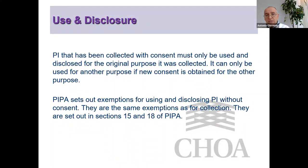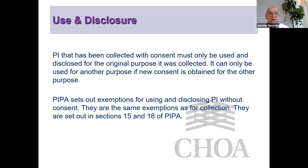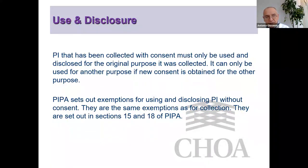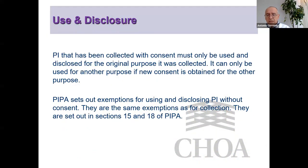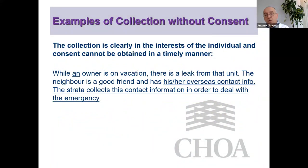Use and disclosure is a key part of your privacy policy. Personal information collected with consent can only be used and disclosed for the purpose it was originally collected — it cannot be used for other purposes. For example, if you've collected phone numbers by consent but now wish to distribute them to everyone in the building for safety check-ins, you must go back to the owners and get their permission to disclose that information.